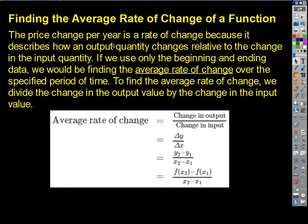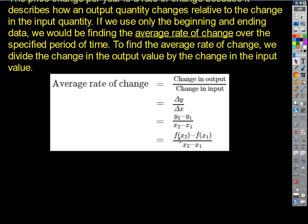So if we turn this into something mathematical, all we do to find the average rate of change for a function is calculate the change in output over the change in input for the whole interval. If we're using x's and y's, that's the change in y over the change in x — y2 minus y1 over x2 minus x1. That looks like slope. In function notation, that becomes f(x2) minus f(x1) over x2 minus x1, where x1 is starting and x2 is ending.